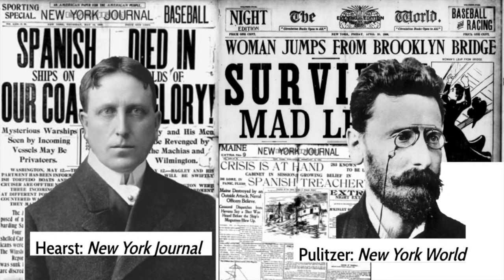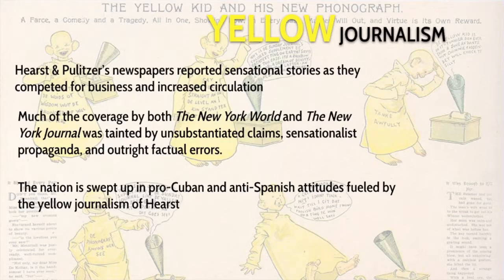The two leaders in this yellow journalism phase were William Randolph Hearst, who owned the New York Journal, and Joseph Pulitzer, who owned the New York World. Both of their papers, as New York papers, were in competition with each other for circulation. Each of them realized that the more outlandish the story, the more papers they sold. Their newspapers published really outrageous stories not just about Cuba but about all over the country, and circulation skyrocketed — the people just couldn't get enough.